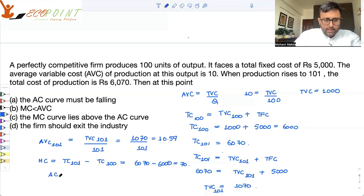What is AC? AC of 100 units will be what? Total cost of 100 units upon 100 units. What is the total cost of 100 units? 6,000. So this thing comes out to be 60.